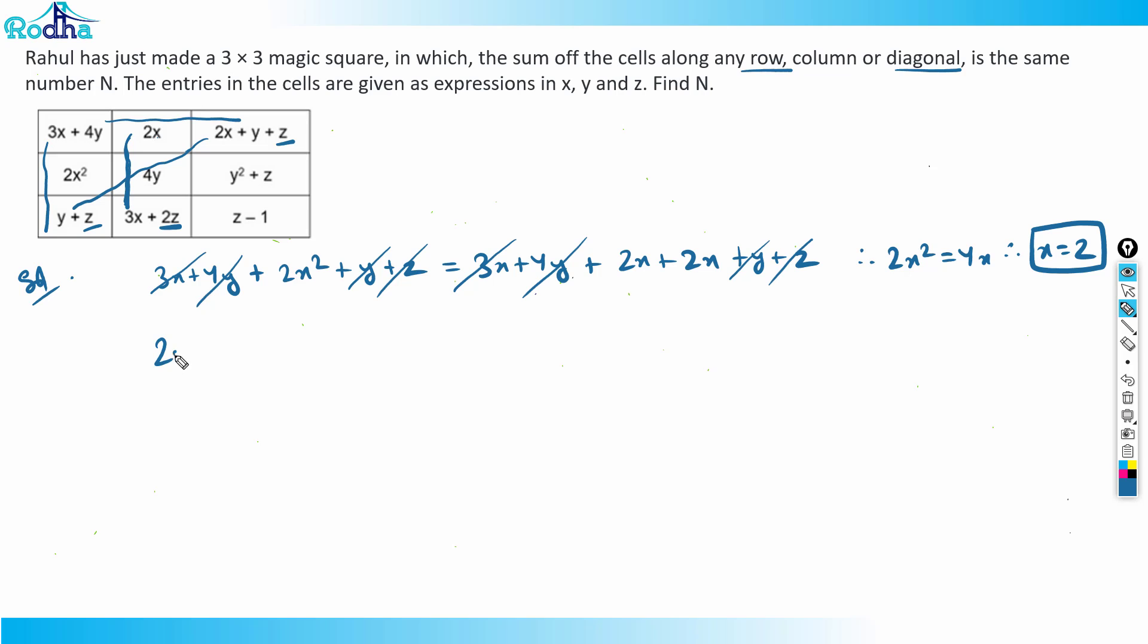Sum of this column will be 2x + 4y + 3x + 2z will be equal to 2x + y + z + 4y + y + z. Now we can just cancel it. 2x and 2x gets cancelled, 2z and 2z gets cancelled. So we'll be getting 3x this side is equal to 6y minus 3y. So I think we'll be getting 3x equal to 2y.